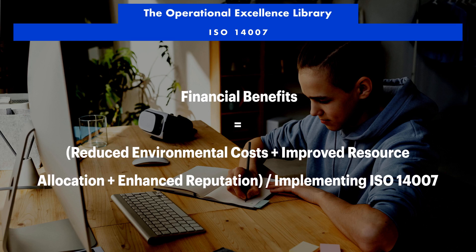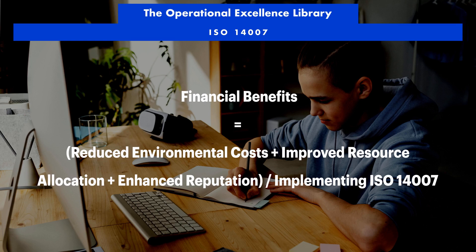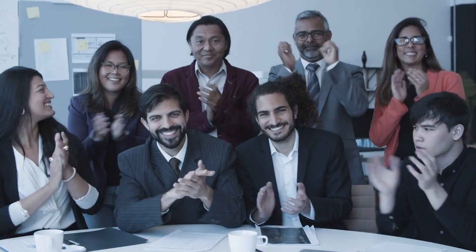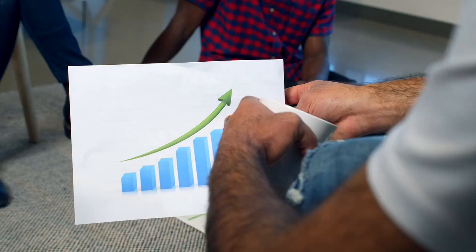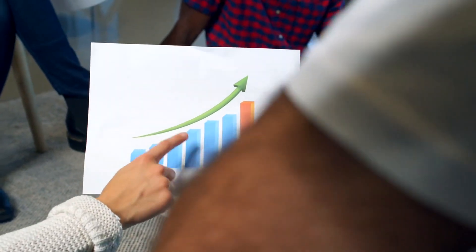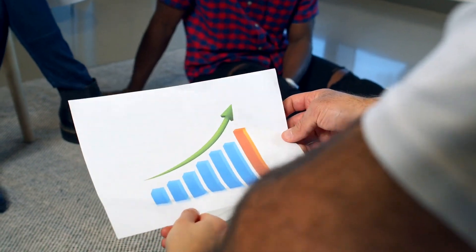In conclusion, implementing ISO 14007 as part of an operational excellence strategy enables organizations to establish a framework for determining, monitoring, and controlling the financial, social, and environmental aspects of their operations. By integrating environmental cost accounting and management into their existing management systems, organizations can identify and minimize environmental costs and risks, improve their financial, social, and environmental performance, and contribute to sustainable development.